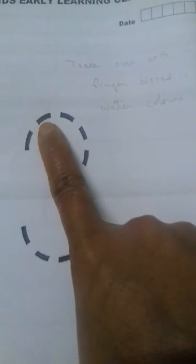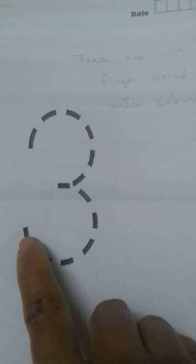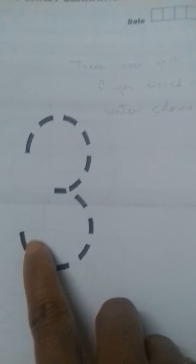For three it is sponge dabbing, then you can give earbud impression, then you can also give thermacold ball pasting activity, pulse pasting. For pulse pasting you can give rajma or masoor dal. Then again it is tracing on the dotted number with finger dipped in water color.